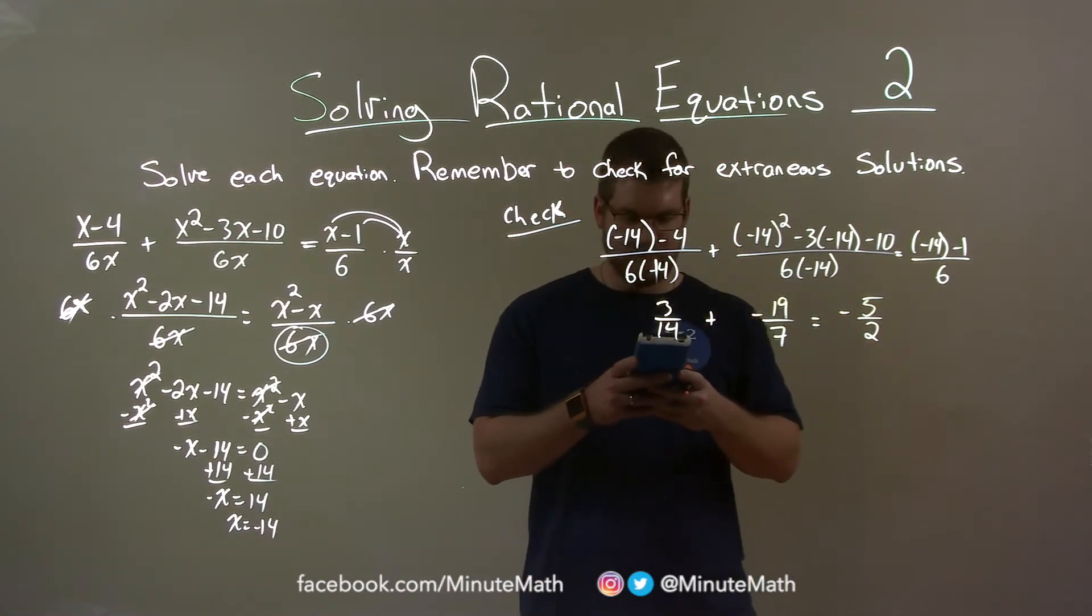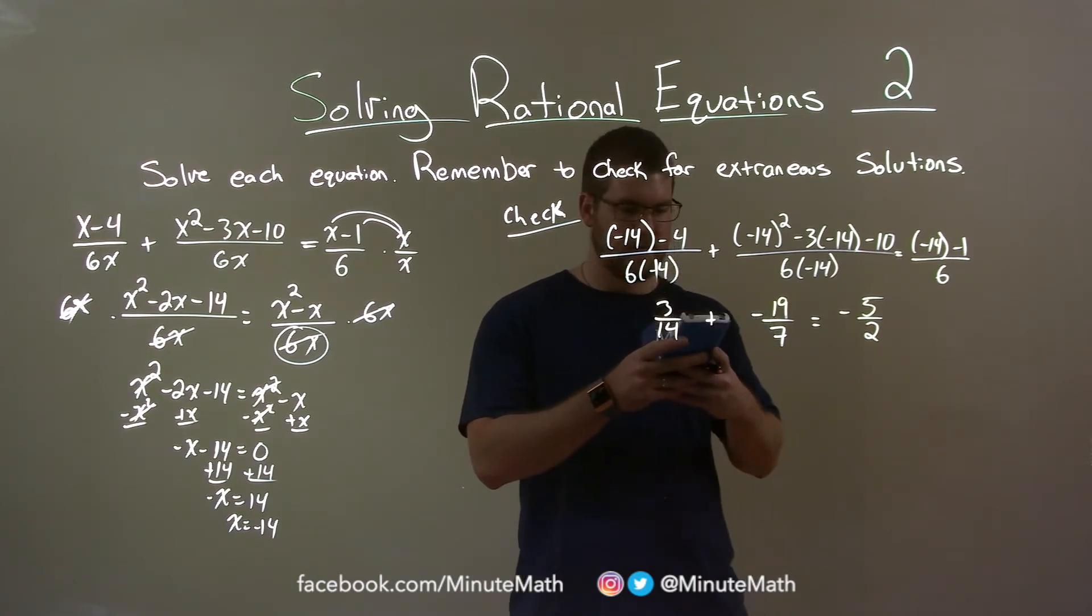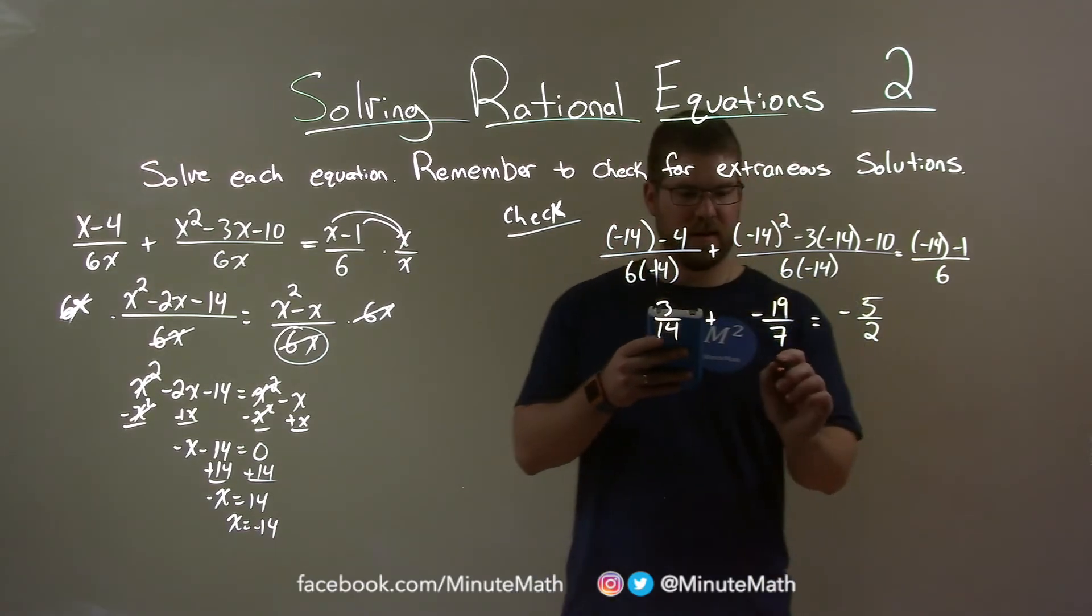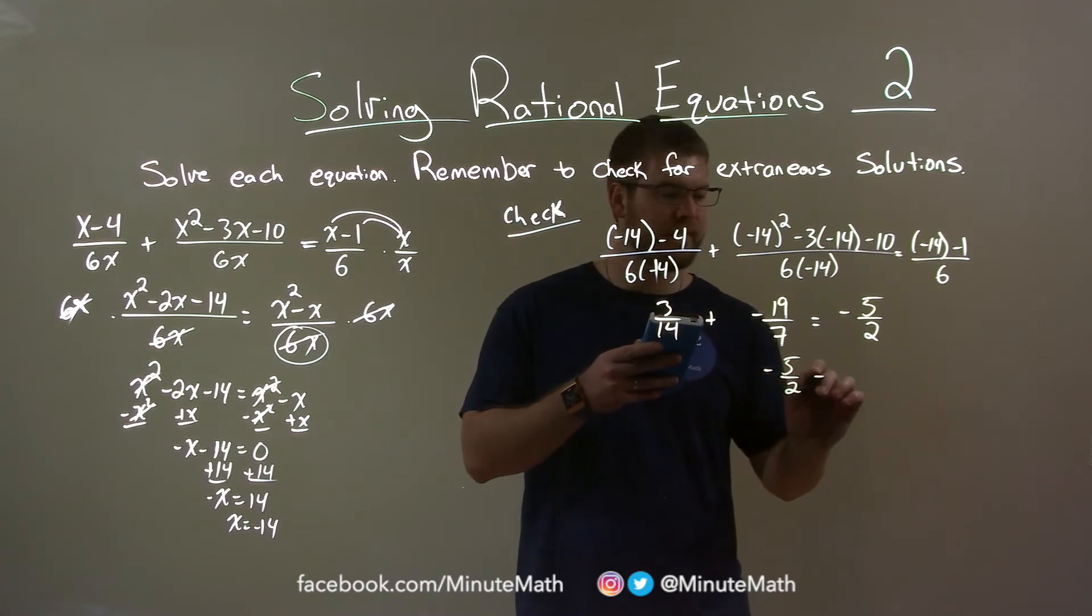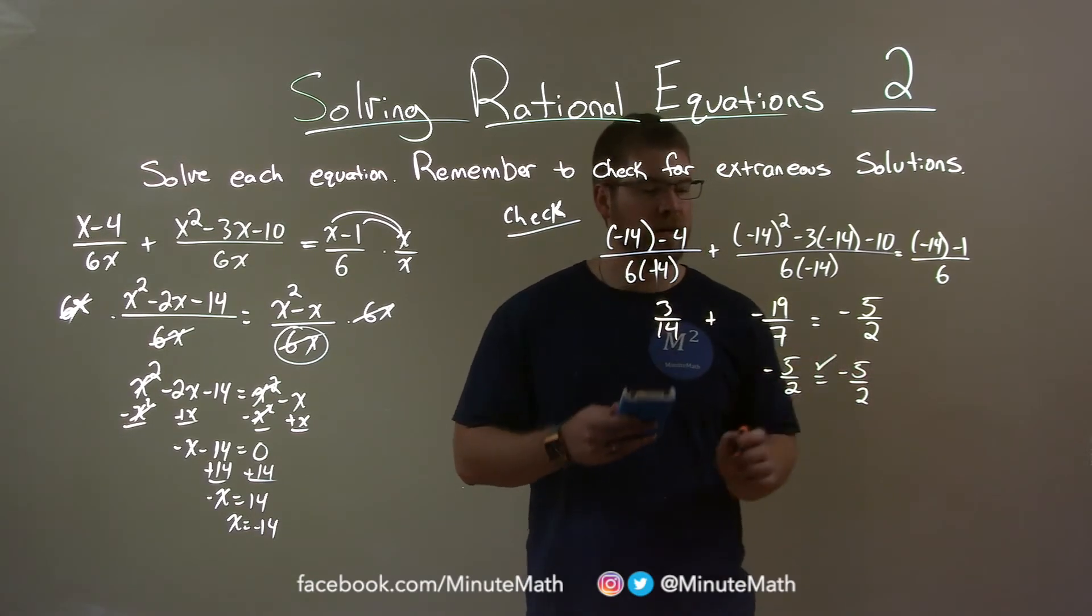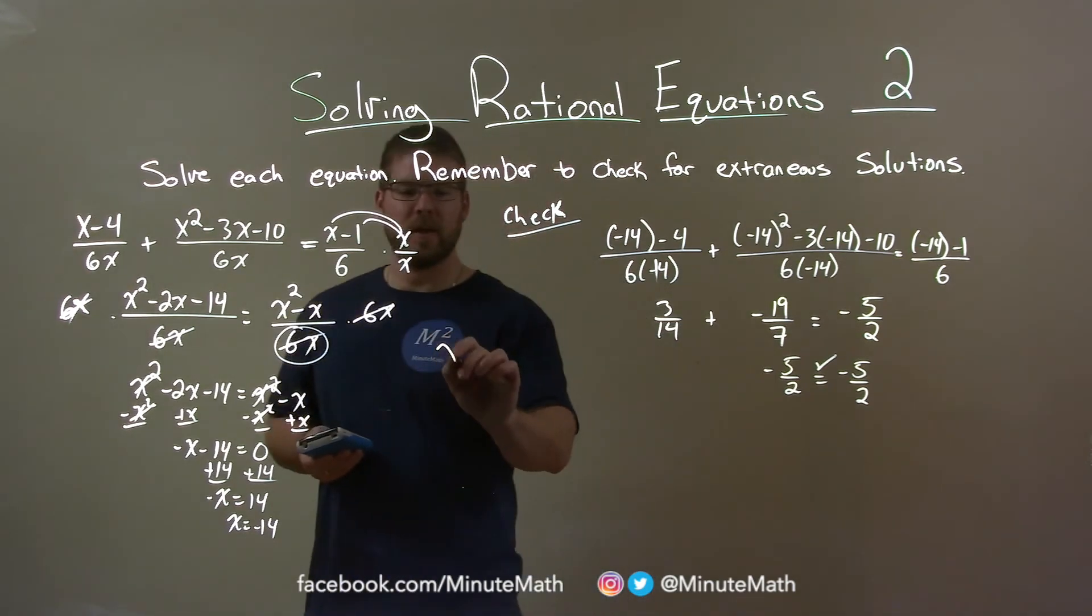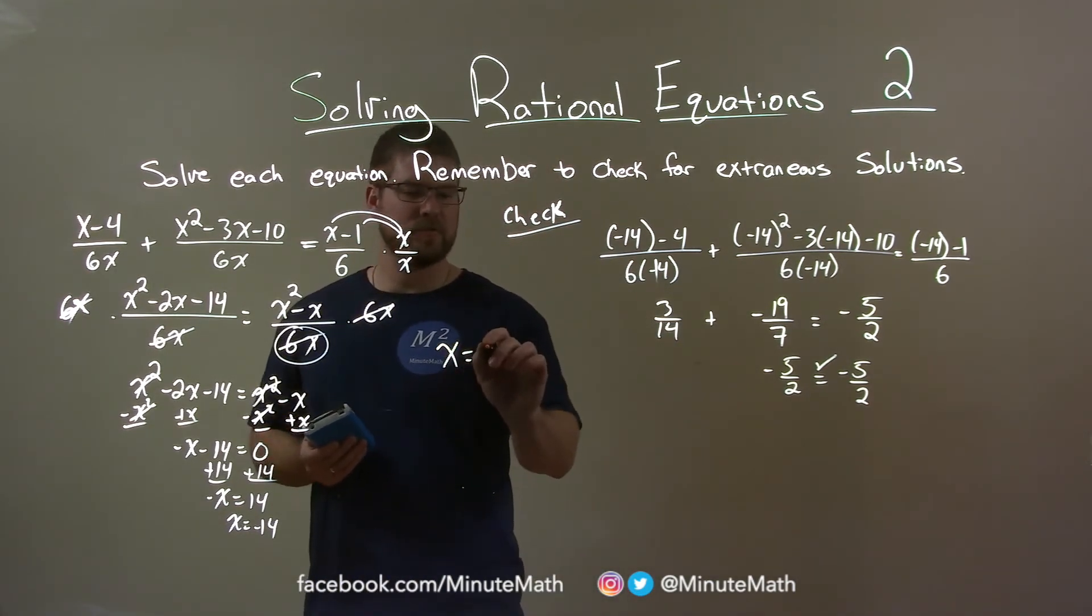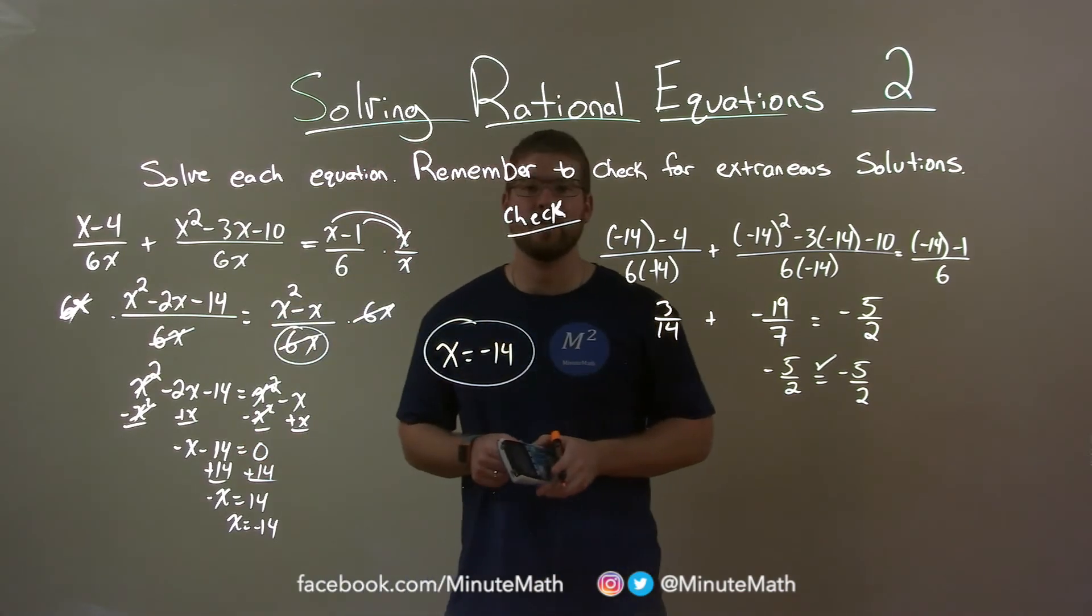Alright, so we'll see if this equals negative 5 halves. 3 divided by 14 plus a negative 19 divided by 7. And we get a negative 5 halves here. So the left and right hand side are equal, making our final answer here, the negative 14, true. So here we have a final answer. x equals a negative 14.